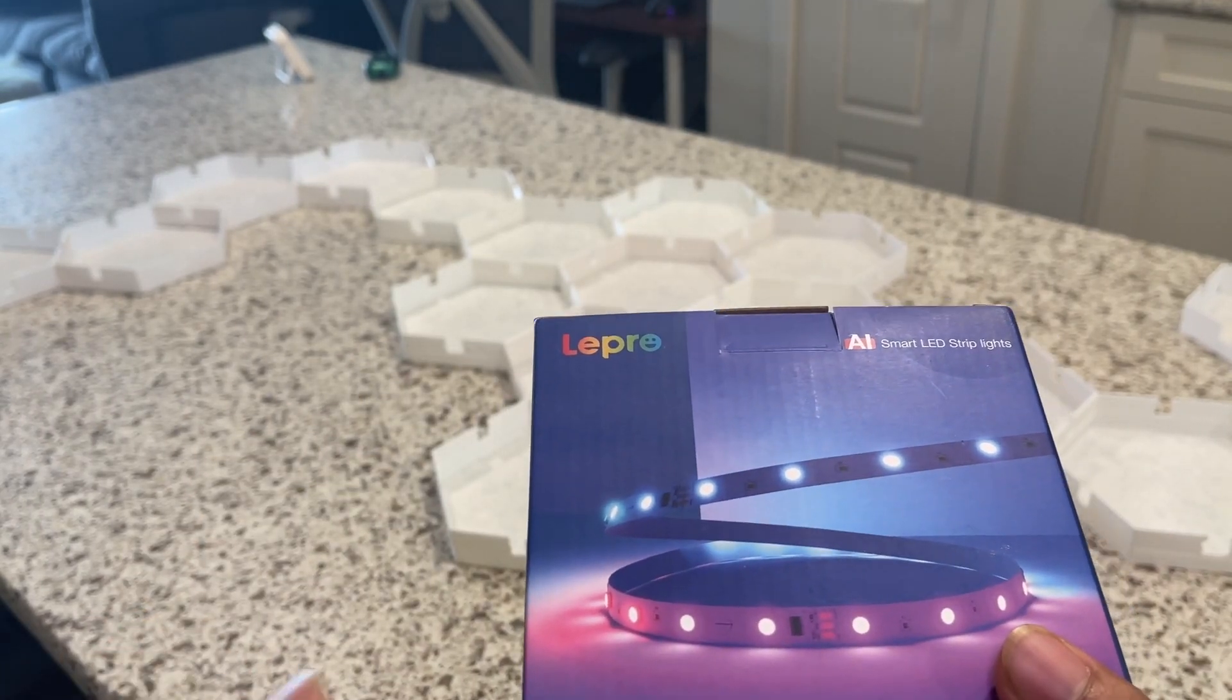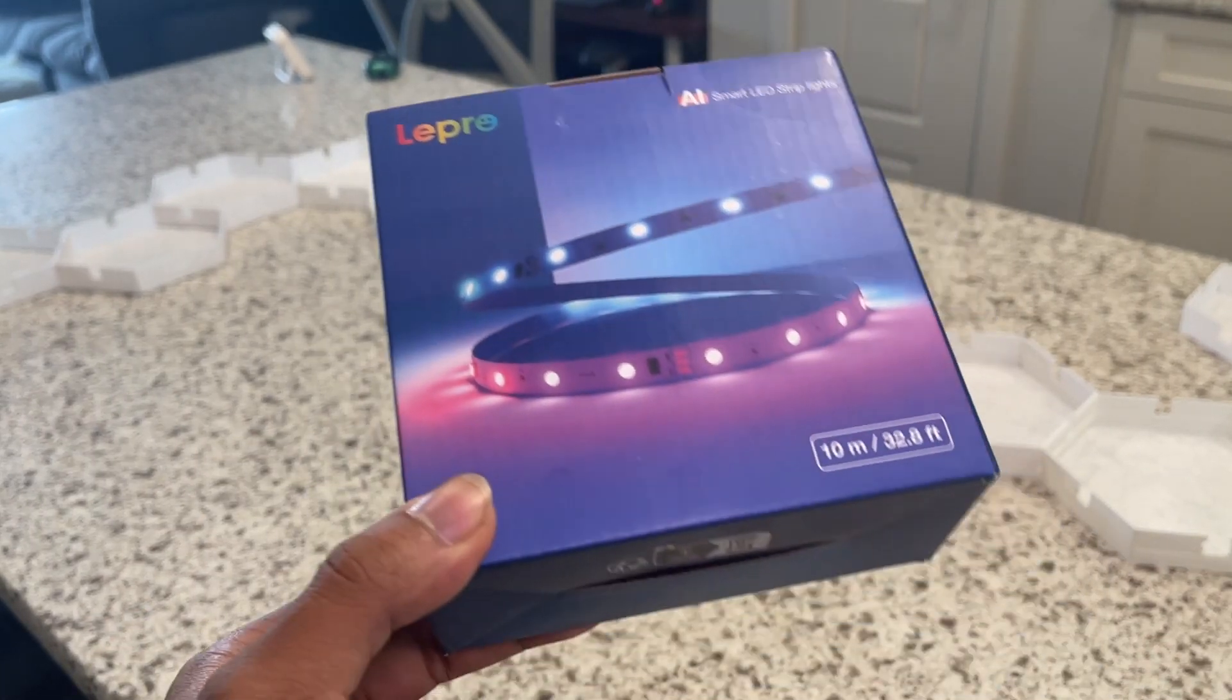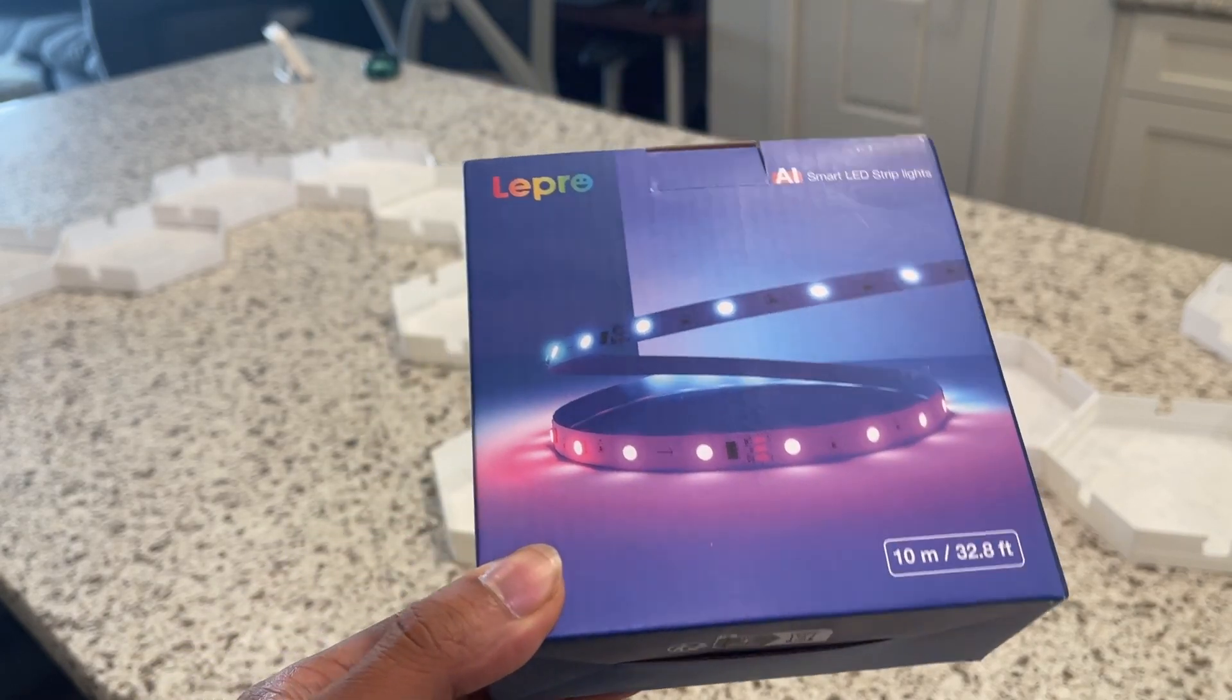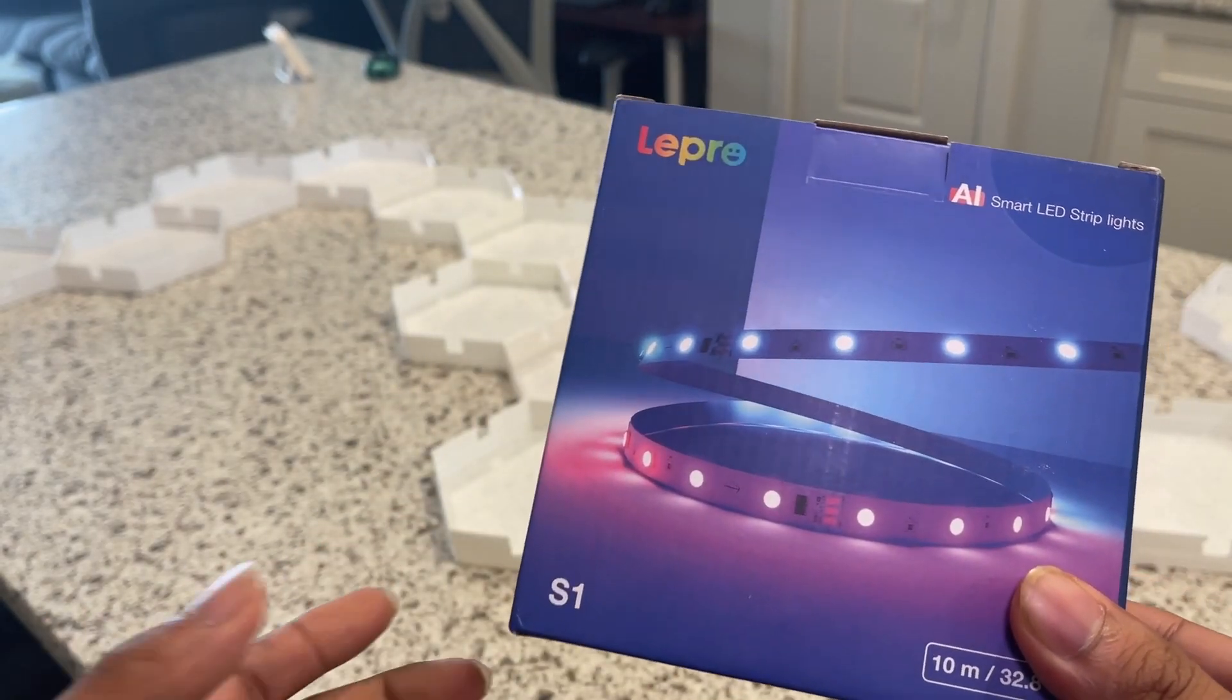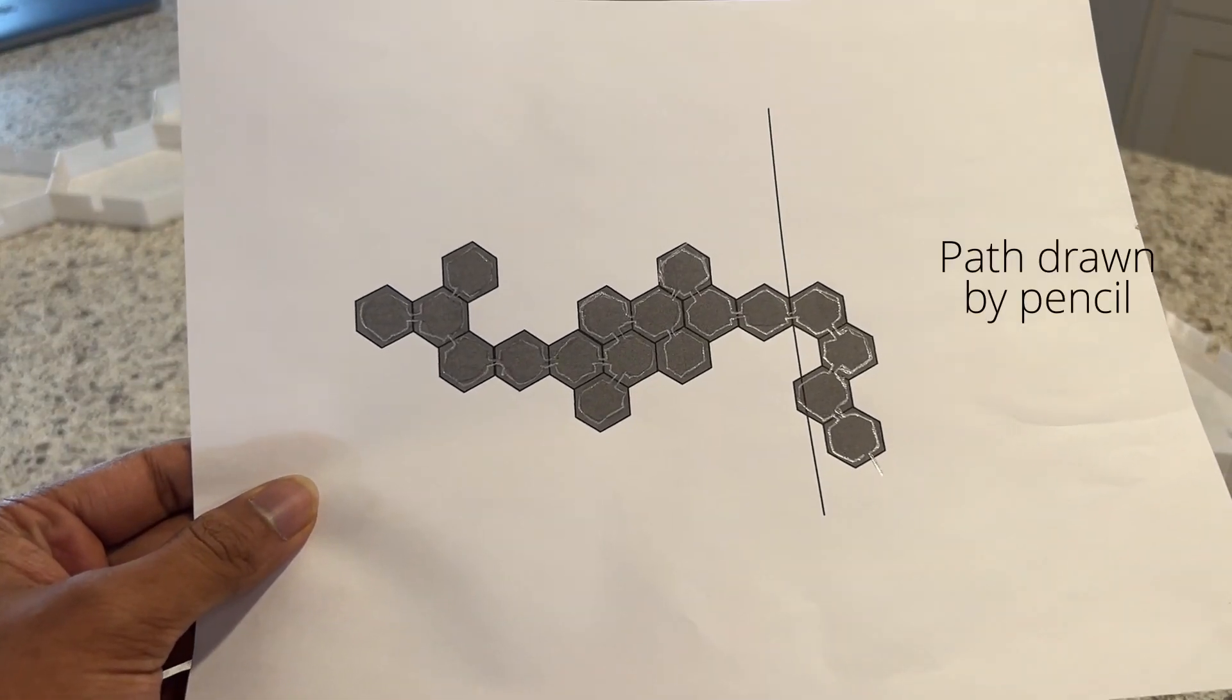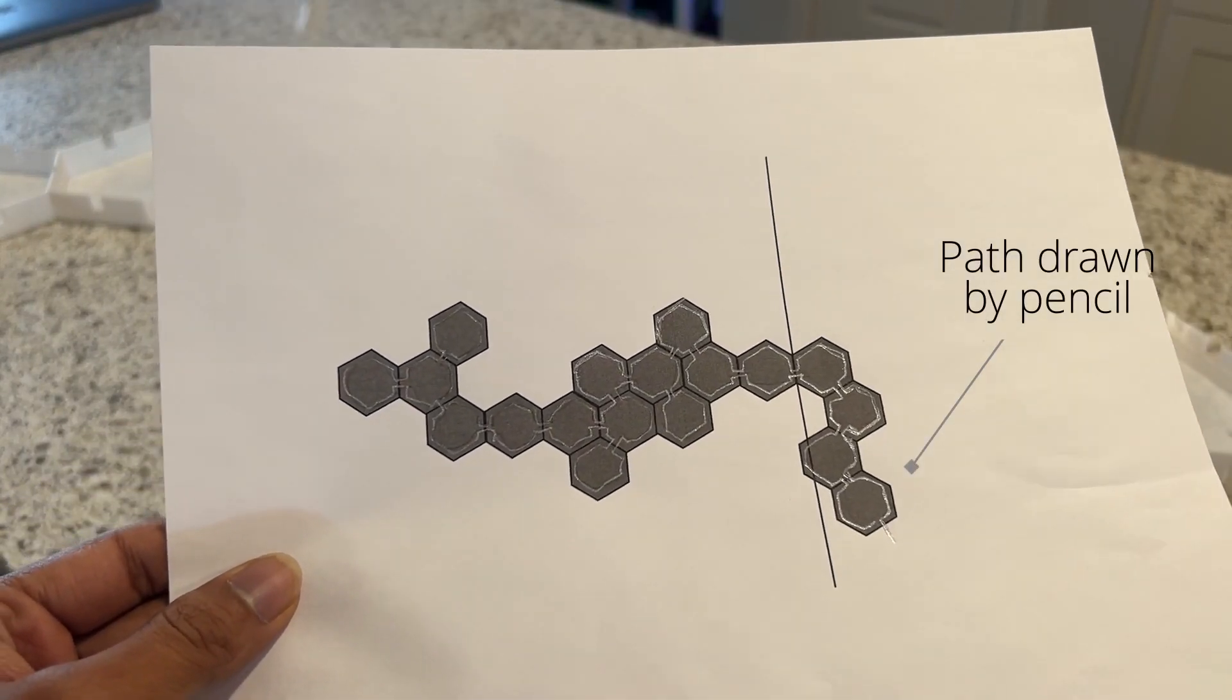This one worked fine, but honestly you can use any LED strip you have lying around as long as it's the right length. I went with the addressable RGB because it looks good and can be controlled by my home assistant. I also mapped out the path for the LED strip.